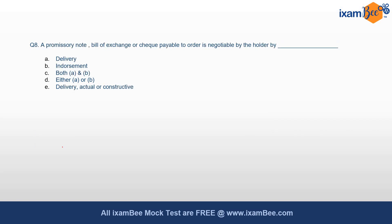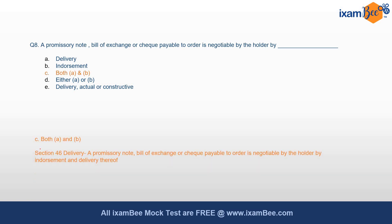A promissory note, bill of exchange, or check payable to order is negotiable by the holder — the answer is both A and B, by delivery and endorsement. Section 46 talks about delivery and mentions that a promissory note, bill of exchange, or check payable to order is negotiable by the holder by endorsement and delivery.